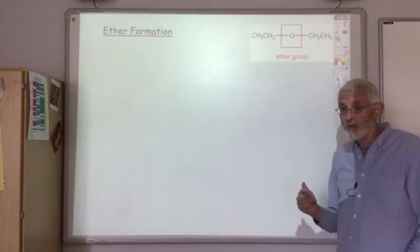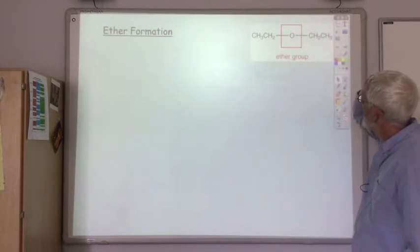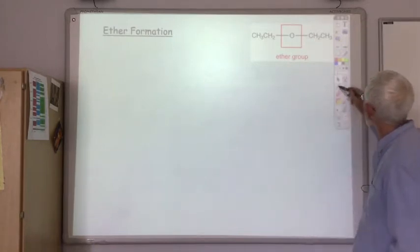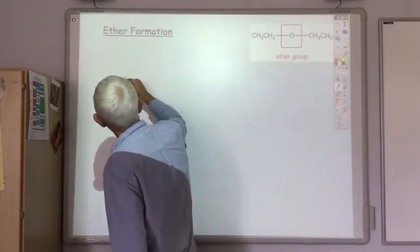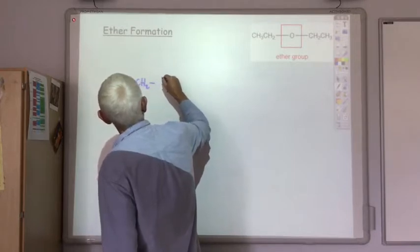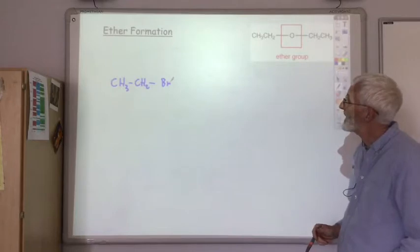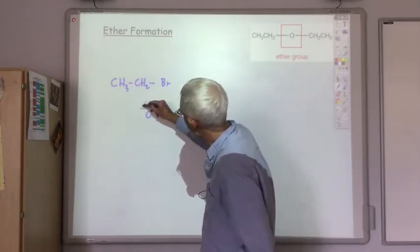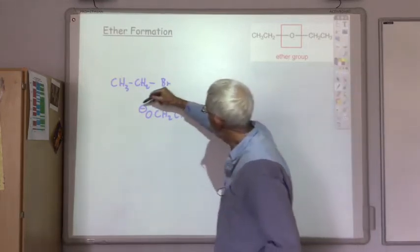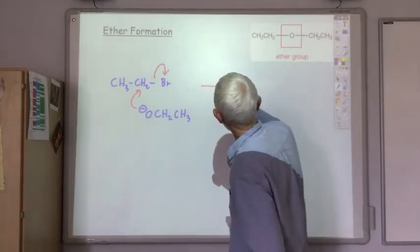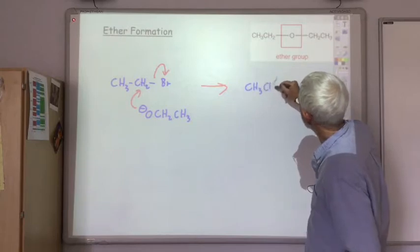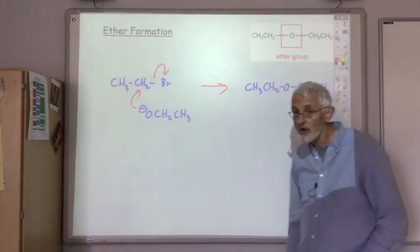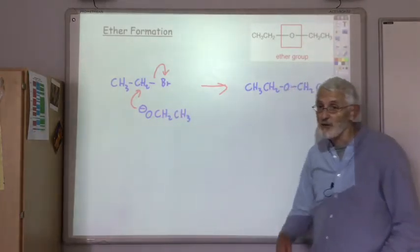The third reaction is ether formation. An ether has two alkyl groups joined together with an oxygen — a bit like an ester but without the C double bond O. The nucleophile is an alkoxide ion, which attacks the carbon of the haloalkane, the halogen bond breaks, and we end up with, for example, CH₃CH₂-O-CH₂CH₃. We could change what the alkoxide is — this example uses an ethyl alkoxide, but we could use methyl, propyl, or whatever.